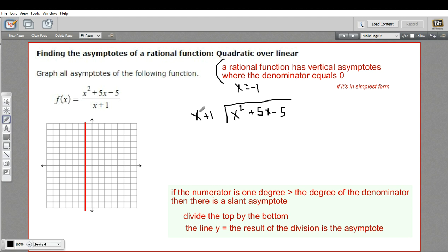So the first question is, what do I multiply x by to get x squared? The answer is just x. x times x is x squared, and x times 1 is x. And then we subtract that chunk. x squared minus x squared is 0. 5x minus x is 4x. And we pull down our minus 5.